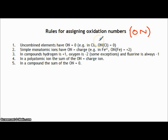For instance, chlorine — it's just an element, not combined with anything else. It is a diatomic molecule but not combined in a compound with anything else. So any uncombined element has an oxidation number of zero. The second rule: simple monatomic ions have an oxidation number that equals the charge.